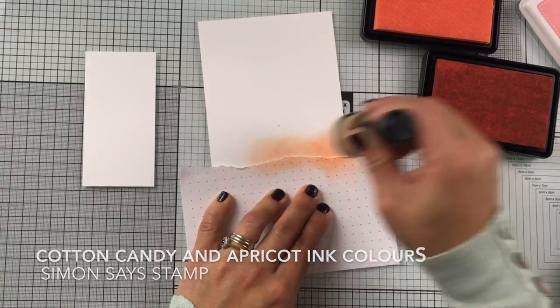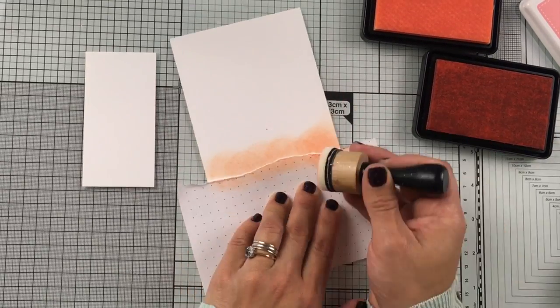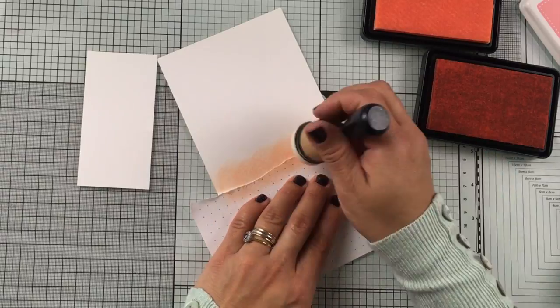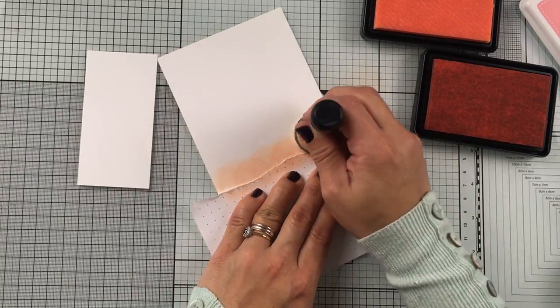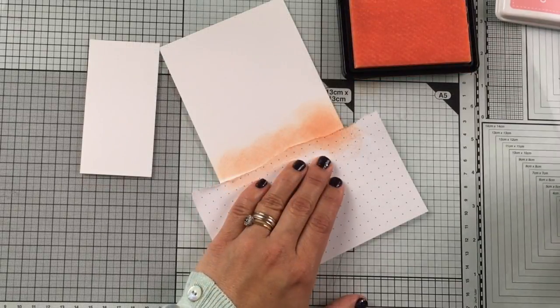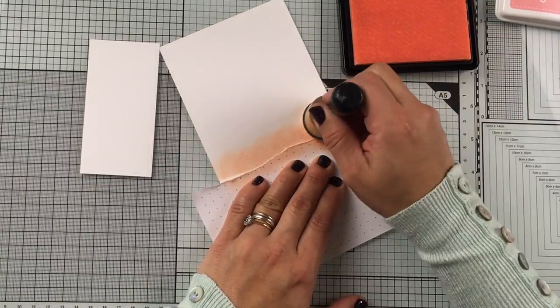So I'm just going to apply it like so there and you will notice that you will see all the marks of the blending tool. Don't worry about that when you are doing this because once you start applying the lighter inks and you blend all together, those marks are going to disappear.